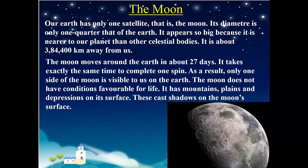The Earth has only one satellite, and that is the Moon. Its diameter is one quarter of the Earth's. It appears so big because it is nearer to our planet than other celestial bodies — it is about 384,400 kilometers away from us. The Moon moves around the Earth in about 27 days and completes one spin. As a result, only one side of the Moon is visible to us from the Earth. The Moon does not have conditions favorable for life. It has mountains, plains, and depressions on its surface, which cast shadows on the Moon's surface.